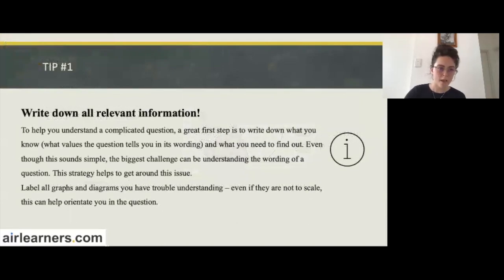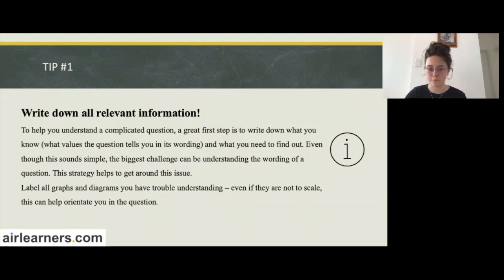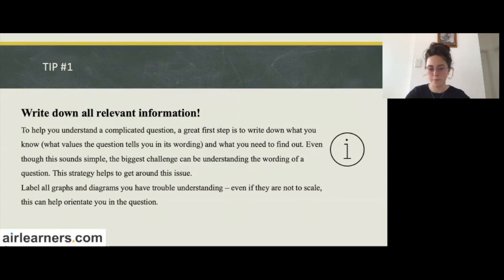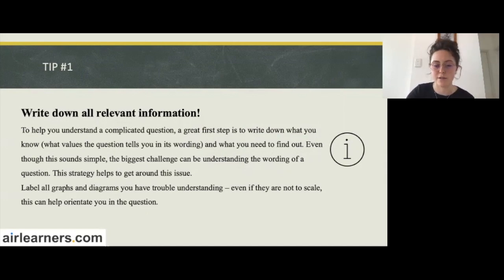Tip one: write down all relevant information. As mentioned in the earlier question, it's a great idea to help you understand a complicated question. Write down what you know — the values the question tells you in its wording — and what you need to find out. Often the biggest challenge with NAPLAN questions can be understanding the wording, so by writing down what you know you're reducing it to the maths and simplifying it for yourself. Label all graphs and diagrams you have trouble understanding — even if they're not to scale this can help orientate you. It will most likely say on the diagram if it's not to scale.